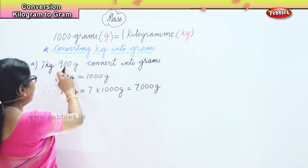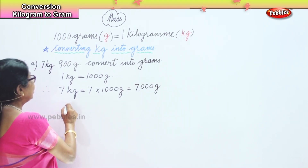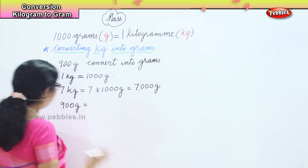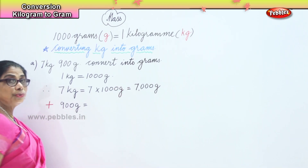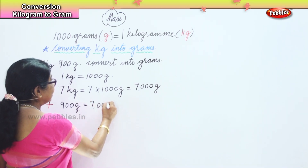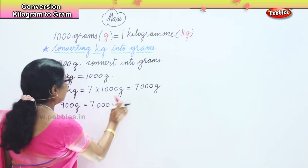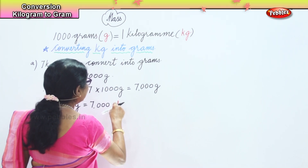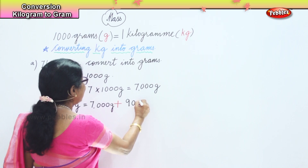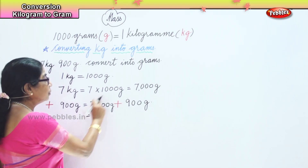Now we need to add the 900 grams. So we have 7000 grams, and we add 900 grams to it. 7000 plus 900 gives us the answer: 7900 grams.